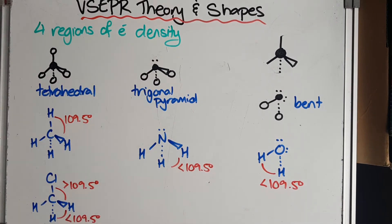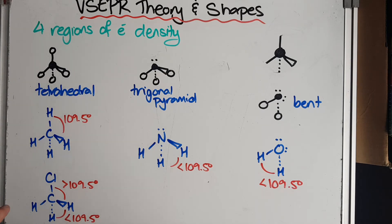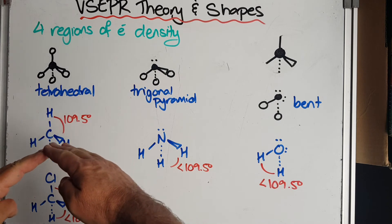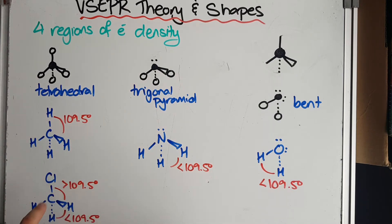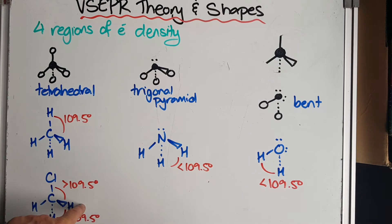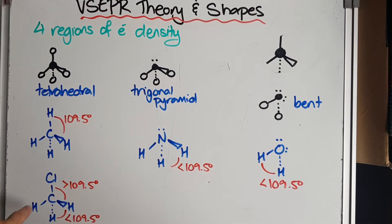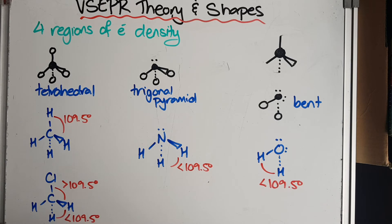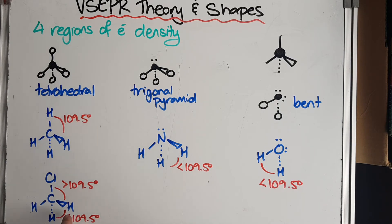However, what happens if one or more of them are different? Something like CH3Cl. Well, the chlorine has got a bigger electron cloud, so it pushes the hydrogens away a little bit more. So it increases the bond angle from chlorine to carbon to hydrogen to be a little bit bigger than 109.5. And in doing so, the repulsion between the neighboring hydrogen-carbon bonds is not as strong, so it becomes less than 109.5 degrees.